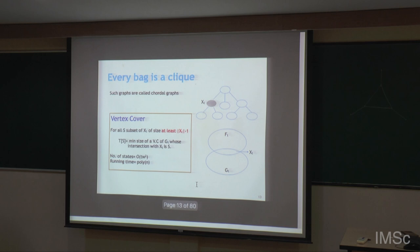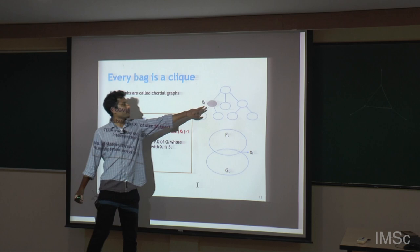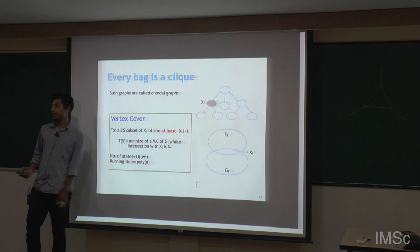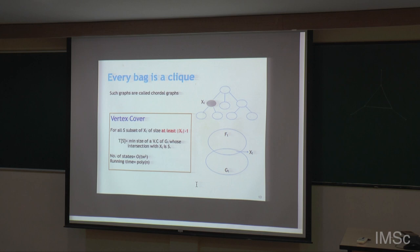How to solve vertex cover in this setting? Because from a clique, we need to pick all but one. That essentially reduces the number of choices — we can leave out at most one from a bag. That leads to a polynomial time algorithm for vertex cover on chordal graphs.